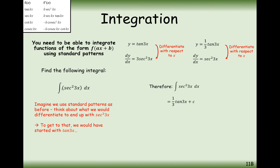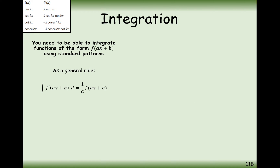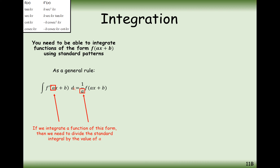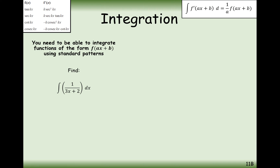A general rule you can remember is that the integral of f'(ax + b) dx is equal to 1 over a times f(ax + b), because we're dividing by the number that's in front of the x. So we divide by the number that's being multiplied by x.